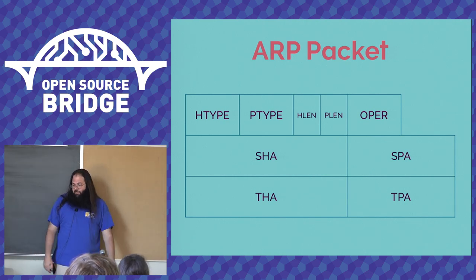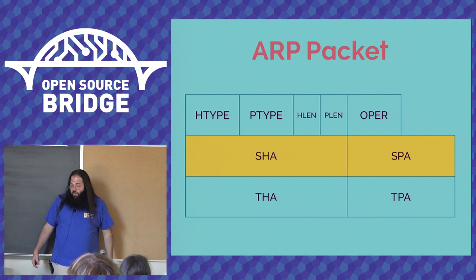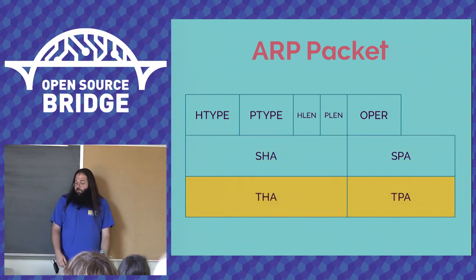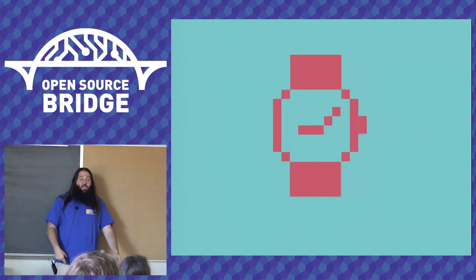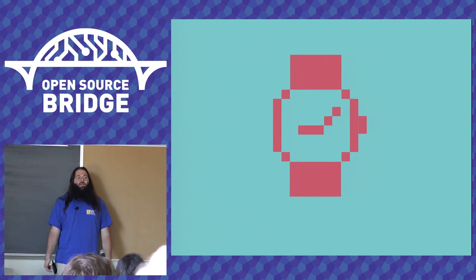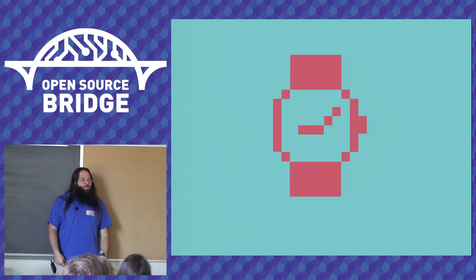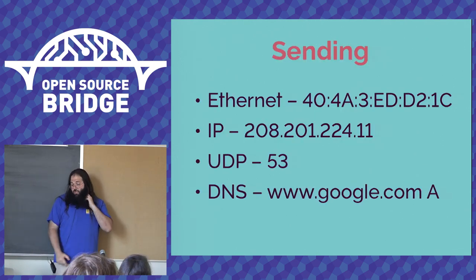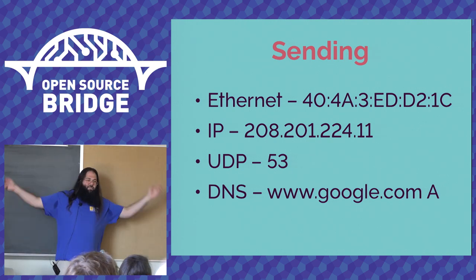ARP packets are intentionally simple — requests and replies use the same format, with some fields set to zero if not relevant. For this query, we fill in our sender hardware address and sender protocol address using our Ethernet and IP addresses. The target hardware address is left empty since that's what we're asking for, and the target protocol address is set to 192.168.1.1. ARP can take up to a few milliseconds because it has to get to the other computer, be decoded, and a response built and returned. ARP is heavily cached, but eventually we get our ARP reply and have all the data we need to send our DNS query.